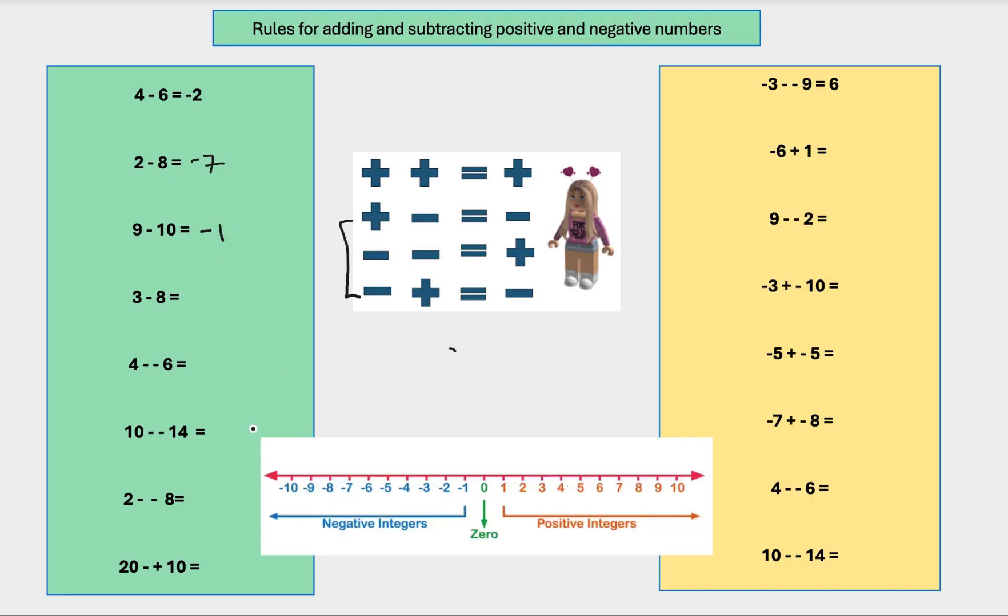The next one. 3 minus 8. And it's a plus 3. So we're here. And it wants us to minus 8. So from 3, we're going to go 1, 2, 3, 4, 5, 6, 7, 8. So our answer there is negative 5.